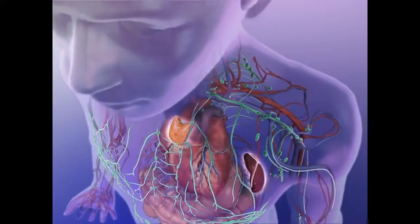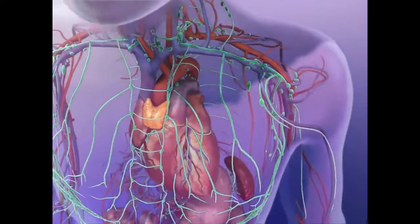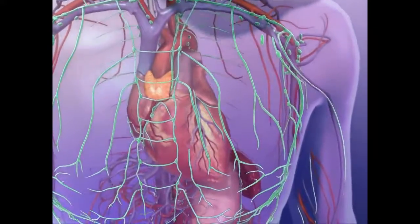The thymus and spleen, along with a network of lymph vessels, ducts, and nodes, form the lymphatic system that protects the body by removing pathogens.